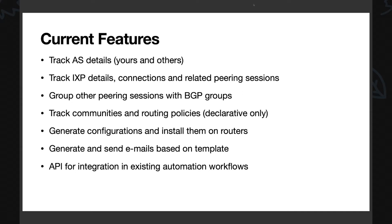However, Peering Manager can generate configurations for your router based on Jinja2 templating — the same templating engine as Ansible. This was intentional, because many people use Ansible for automation, making it easy to get started with the configuration templating system. A feature that needs rework is the email component: we want Peering Manager to be able to send peering requests, maintenance emails, and similar communications. And of course there's the API to automate within your workflow.